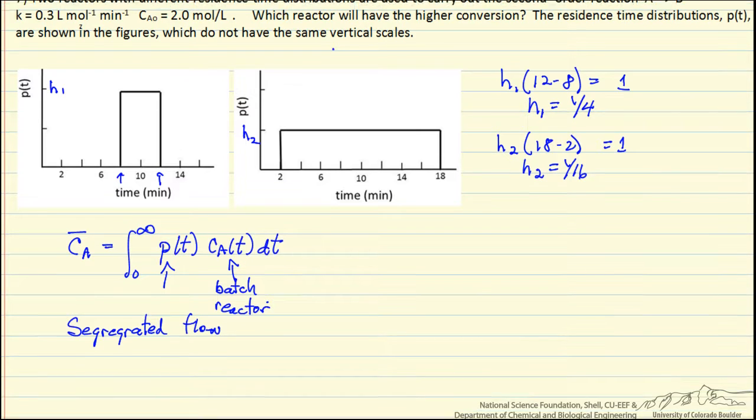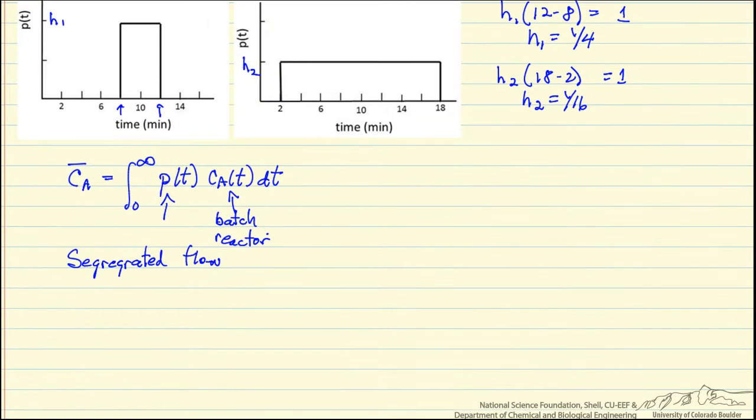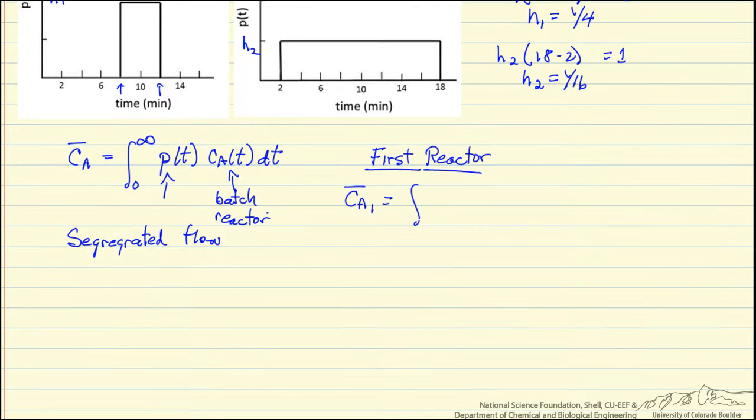So let's look at now the first reactor. So I will call this CA1 at the exit. We only need to integrate between 8 and 12 minutes, because P(t) is 0 everywhere else, and P(t) is 1/4 over this range. And now we need to put in the term from solution of batch reactor, second-order reaction.